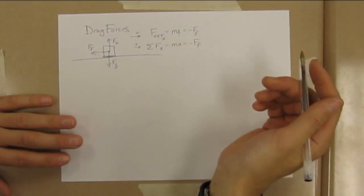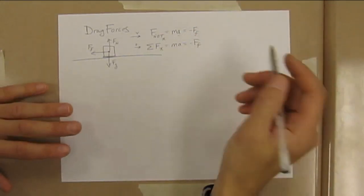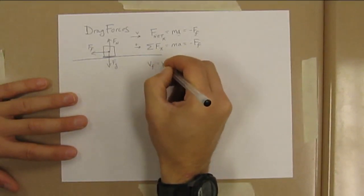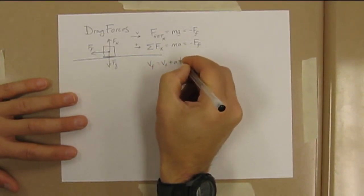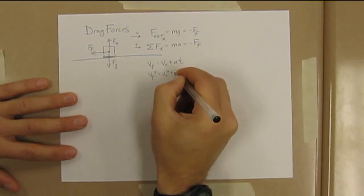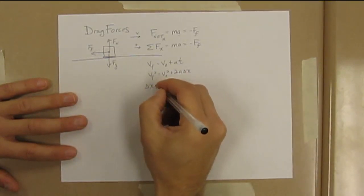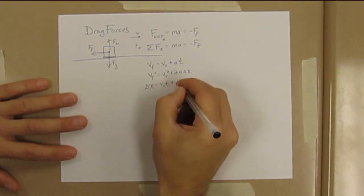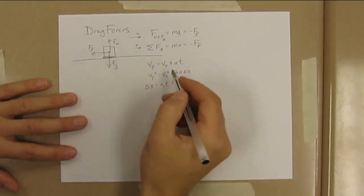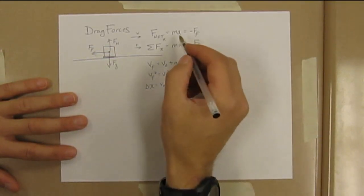Once you have the acceleration, you can find the velocity. You could do this many different ways: V_f = V_0 + at, or V_f squared equals V_0 squared plus 2a delta x. You could find out where it is by using these formulas. You could find out a lot about this block—its velocity and position—after you solve for the acceleration from a Newton's law equation.